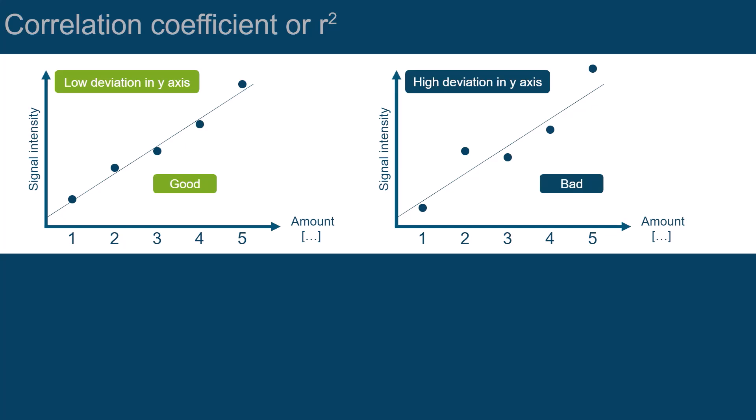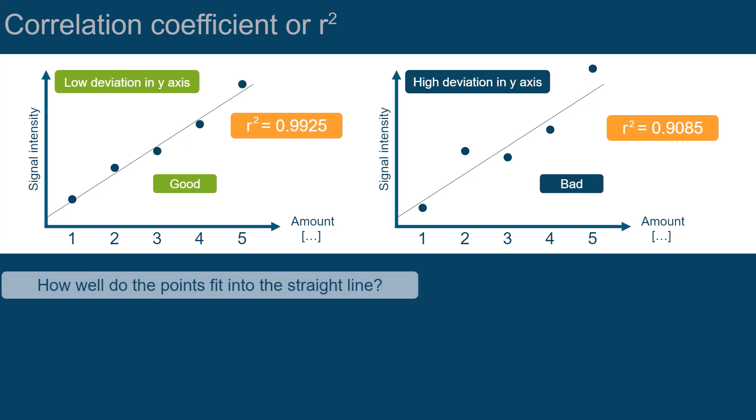But how good is good and how bad is bad? Here, the correlation coefficient comes into play. It describes how well the points fit into the straight line, and it can vary between the values 0 and 1, with 1 indicating the perfect correlation.